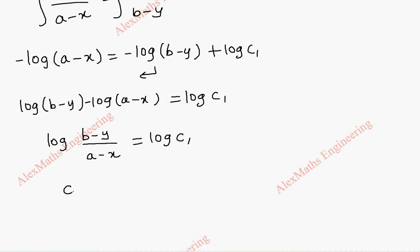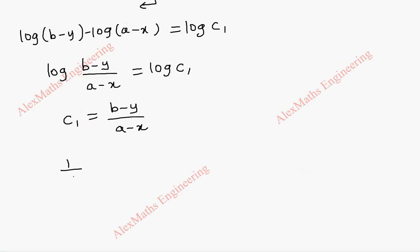Removing log, we get C1 as B minus Y by A minus X. I can use this or I can use its reciprocal A minus X by B minus Y. Usually we write first term as X and second term as Y, so I take U as A minus X by B minus Y.